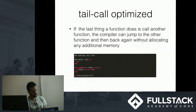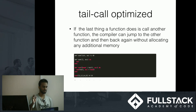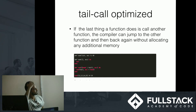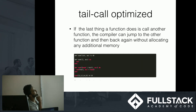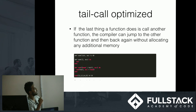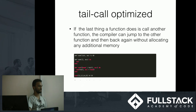Elixir is tail call optimized. Tail recursion is when you have a recursive function where the last thing you do is a recursive call. If your compiler is tail call optimized, you can jump to a function and back again without allocating additional memory. So in Elixir, you don't have to create additional stack frames for recursive calls.